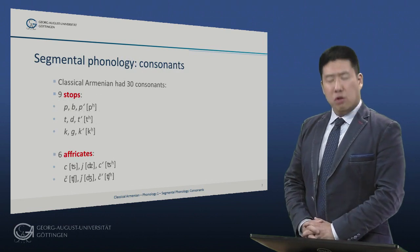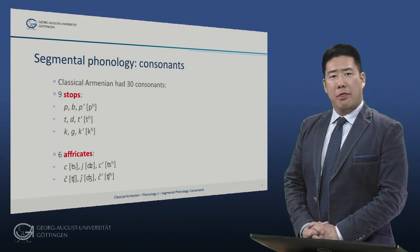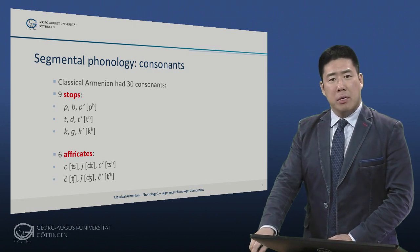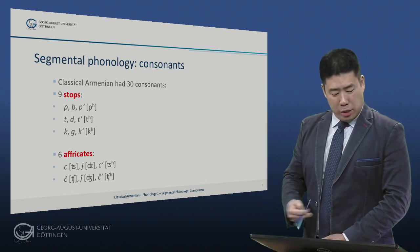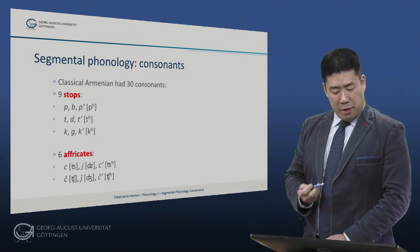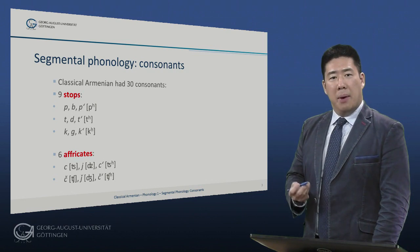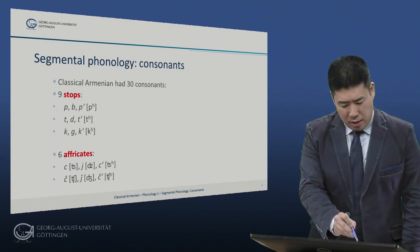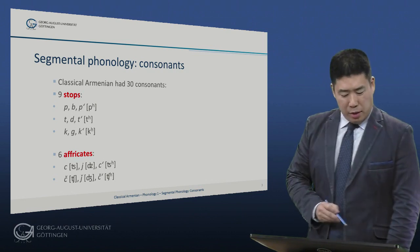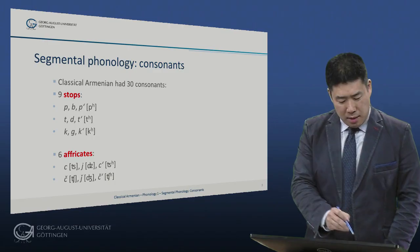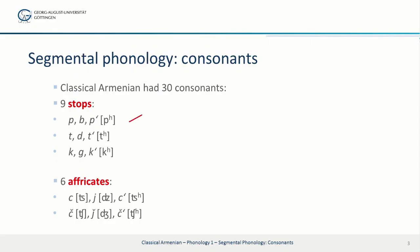Classical Armenian had thirty consonants, including nine stops, arranged in a series of three labial stops, three dental stops, and three velar stops.